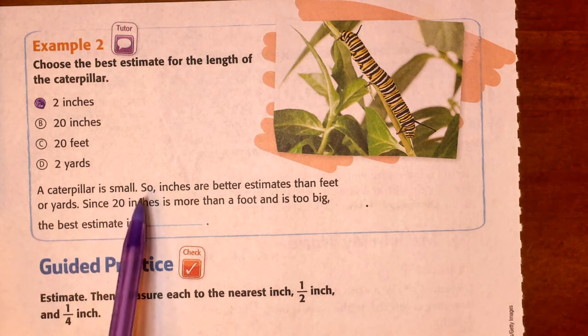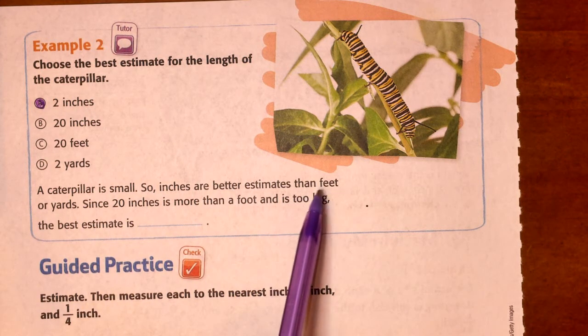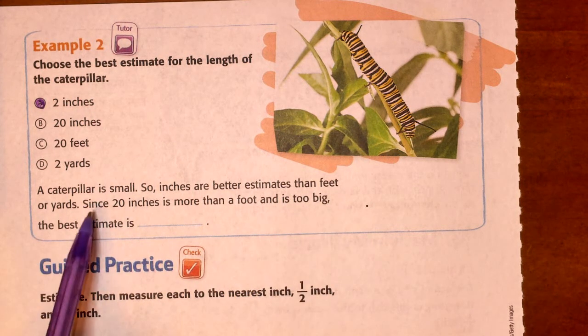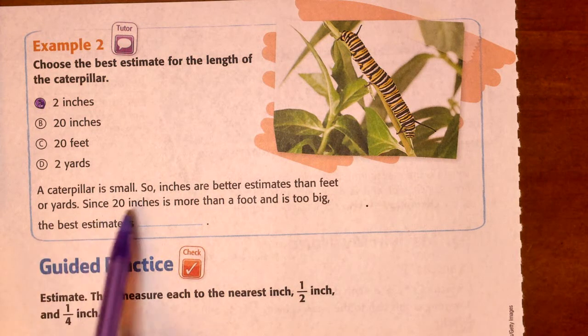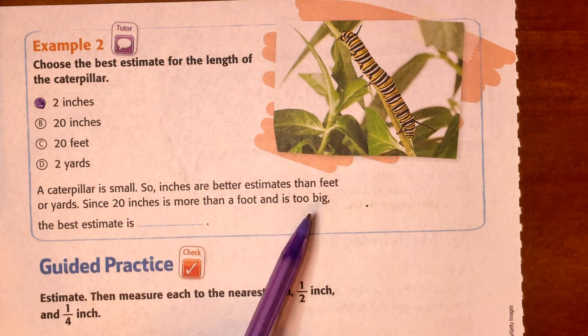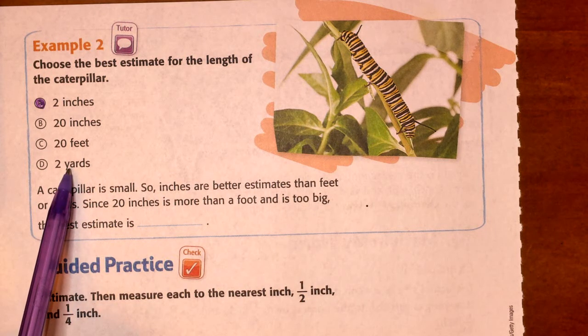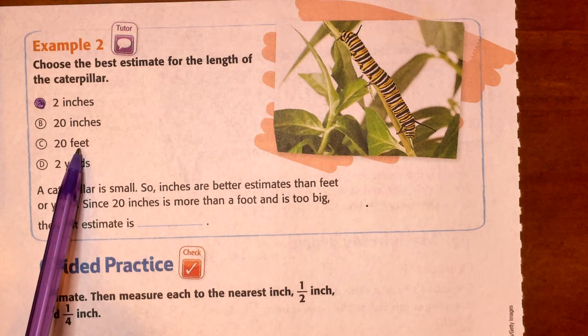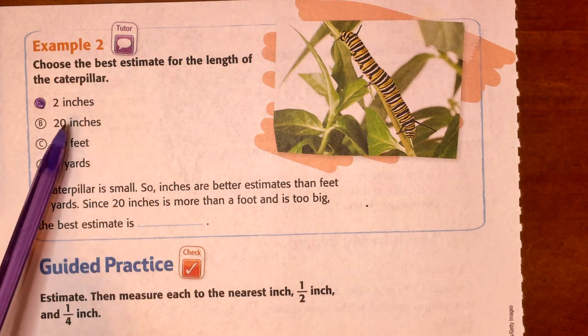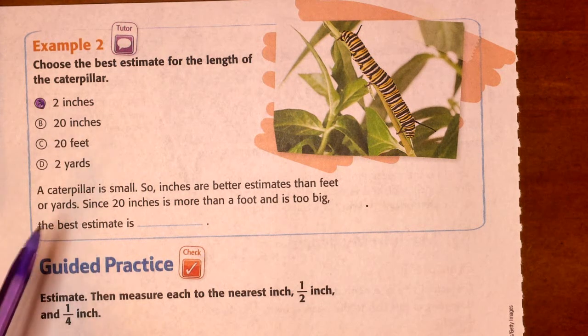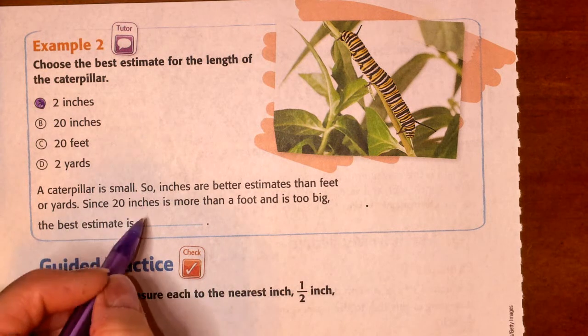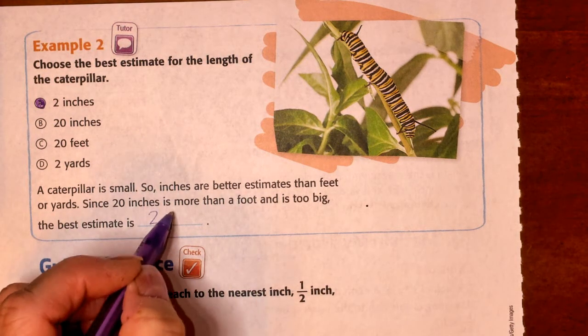Since a caterpillar is small, inches are better estimates than feet or yards. Since 20 inches is more than a foot and is too big. And we know it's not two yards because two yards is quite large. Twenty feet is quite large. So, we're working in inches. The best estimate would be two inches.